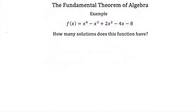Let's take what we learned about the fundamental theorem of algebra and apply it. Here we have f of x equals x to the fourth minus x cubed plus 2x squared minus 4x minus 8. We're asked: how many solutions does this function have? This is a fourth degree polynomial, so it has to have four solutions.